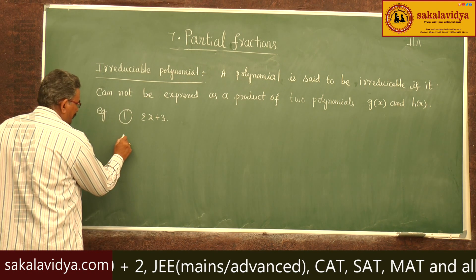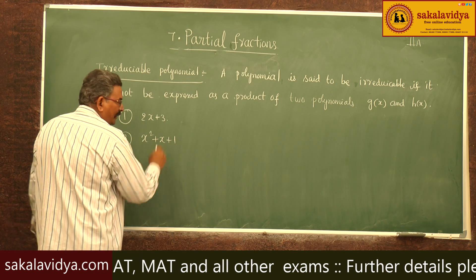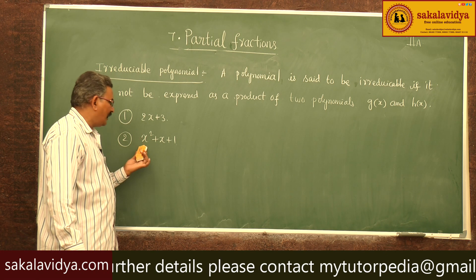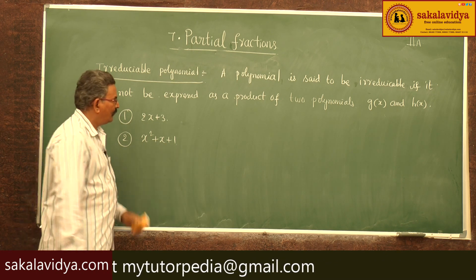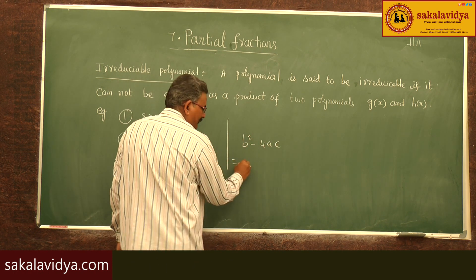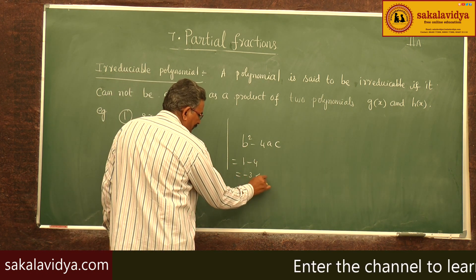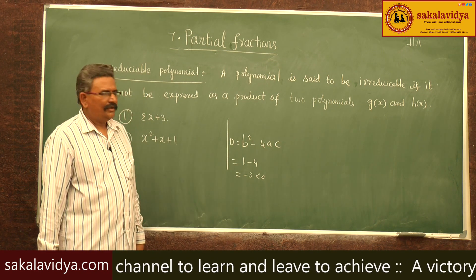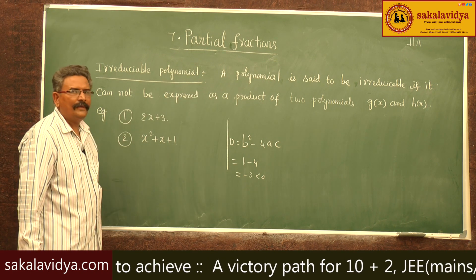Let us take one more example: x squared plus x plus 1. Can it be factored? Because it is a quadratic expression, if you find the discriminant — b squared minus 4ac — that is 1 minus 4, so minus 3, which is less than 0. So it cannot be split further. These two are actual examples of irreducible factors.